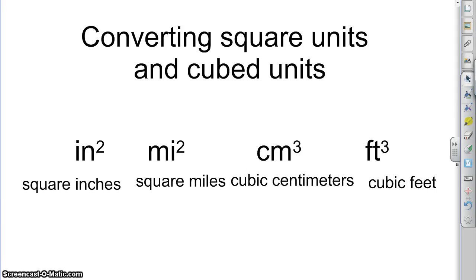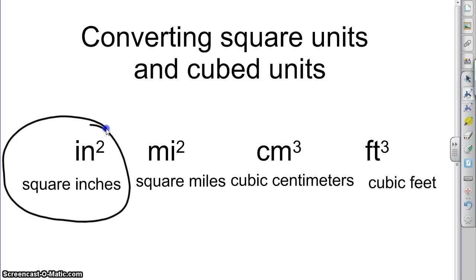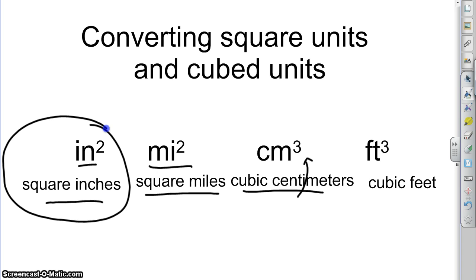What about those special units like square units and cube units? How do you convert things like square inches, square miles, cubic centimeters, cubic feet? When you see these, understand there are two ways of writing and speaking them — they mean the same thing. Square miles would be written as MI squared; cubic centimeters and cubic feet use the exponent 3 to indicate cubic.